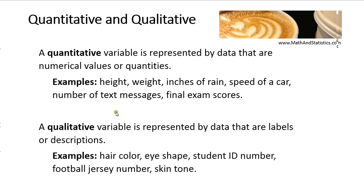The most challenging problem with differentiating qualitative versus quantitative is when the variable is numeric but not actually a real quantity. Student ID number is a perfect example — it's a number, but that number has no real numerical meaning. It doesn't tell you anything about the student except a label, so it is qualitative data. Same with a football jersey number: it's just a label for that player, also qualitative. Just because something is a number doesn't make it quantitative — the number has to actually represent a true quantity.